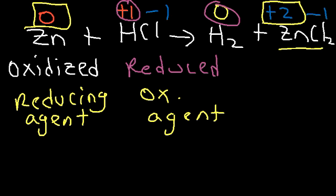Zinc is considered the reducing agent because it caused the other substance, hydrochloric acid, to be reduced. And hydrochloric acid is the oxidizing agent because it caused zinc to be oxidized. Let's go ahead and try another example for the sake of practice.